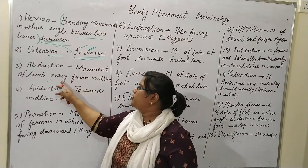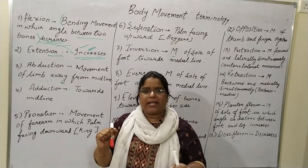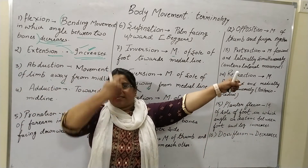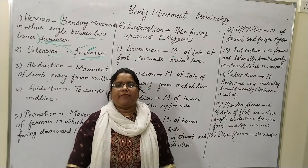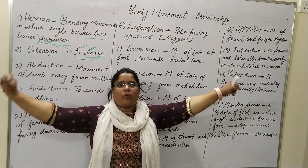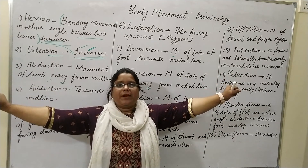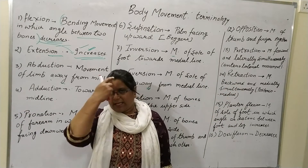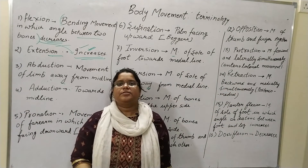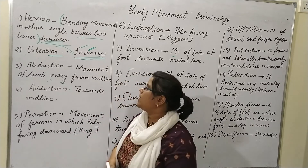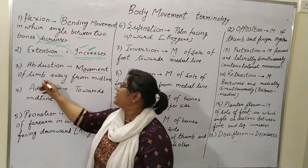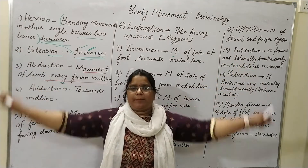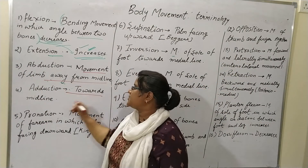Now, abduction — the movement of a limb away from the midline. If I am doing like this, this is abduction: the movement of the limb away from the midline. And if I am doing like this, this is adduction — the body movement towards the midline. So abduction is movement of limb away from the midline, and adduction is movement of limb towards the midline.